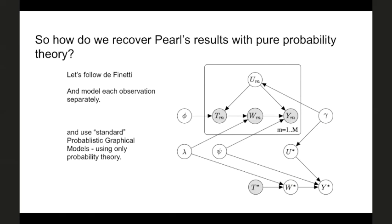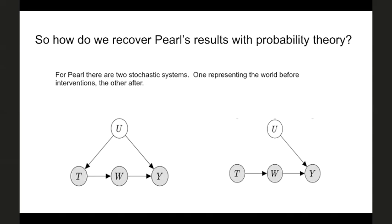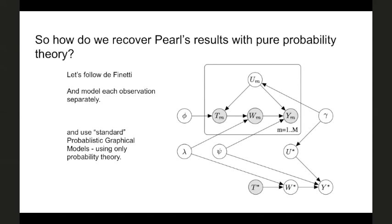Because we're Bayesian, we're putting distributions over parameters for all the conditional relationships — these allow you to draw connections between the observational data and the predictive data distribution that determines your causal effects. Your treatment in the interventional system is T*, which is no longer influenced by U*. There are a few points to emphasise about the difference between probabilistic graphical models and causal graphical models as per Pearl. For probabilistic graphical models, arrows represent factorizations and factorization is arbitrary — you can factorize in any direction. For Pearl, causation follows arrows and the direction is extremely important.